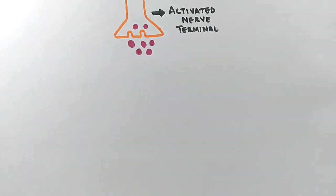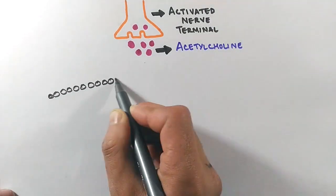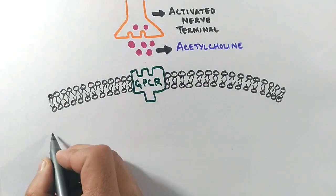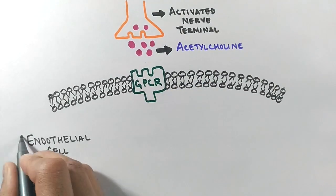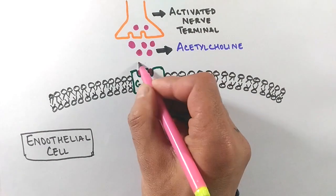In order to do so, it secretes neurotransmitter which is acetylcholine. On the other hand, we have endothelial cells comprising of GPCR, which is G protein-coupled receptor, and this receptor will receive the acetylcholine molecules.